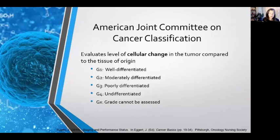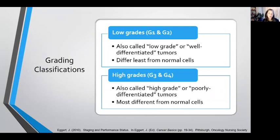There are several different ways to classify cancer. One is the American Joint Committee on Cancer classification, which evaluates the level of cellular change in the tumor compared to the tissue of origin. You'll see different grades from G1 through G4. Low grades — grade one and grade two — are also called well-differentiated tumors, where the cells differ the least from normal cells. High grade tumors — grade three or grade four — may also be called poorly differentiated tumors, and they look the most different from normal cells.